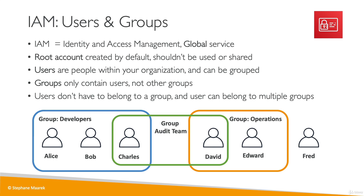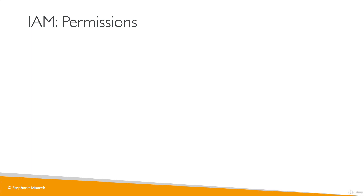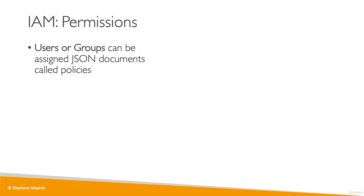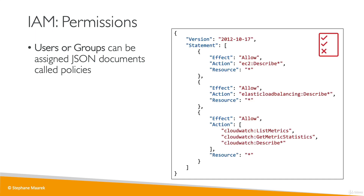So why do we create users and groups? Because we want to allow them to use our AWS accounts, and to do so we have to give them permissions. Users and groups can be assigned what's called a JSON document — called a policy, an IAM policy. It looks just like this. You don't have to be a programmer; this is just describing in plain English what a user or group is allowed to do. In this example, we allow people to use the EC2 service and do describe on it, to use the Elastic Load Balancing service and do describe on it, and to use CloudWatch. Through this JSON document, we are allowing our users to use some services in AWS.